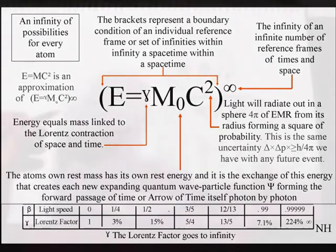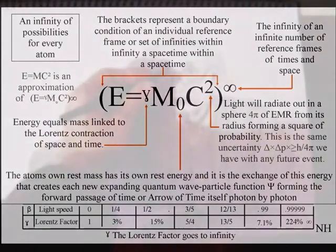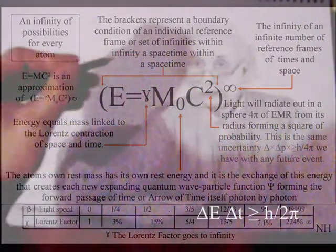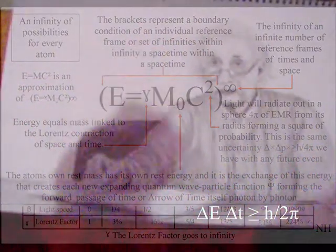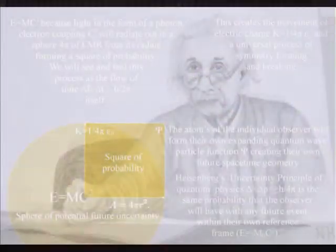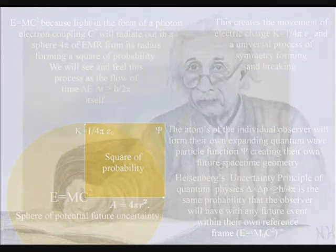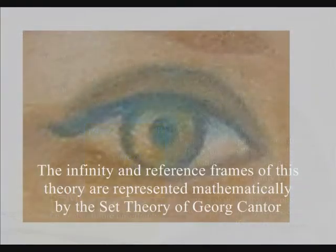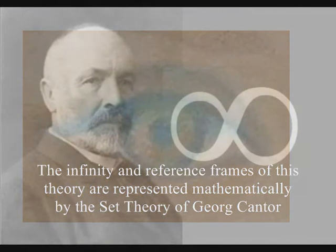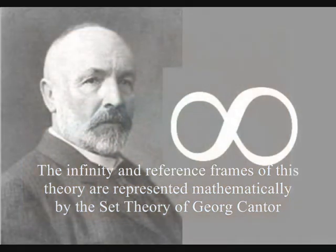An artist will take energy and time to create a work of art, because the atoms of the hand and eye have bonded together, forming the movement of electric charge, creating their own potential future. Creation is truly in the hand and eye of the beholder in this theory. This video will put forward the idea that only an infinity of possibilities could form the diversity and complexity of life.